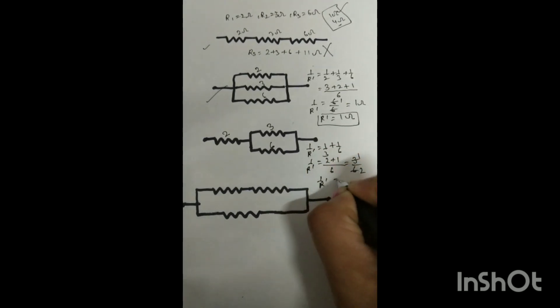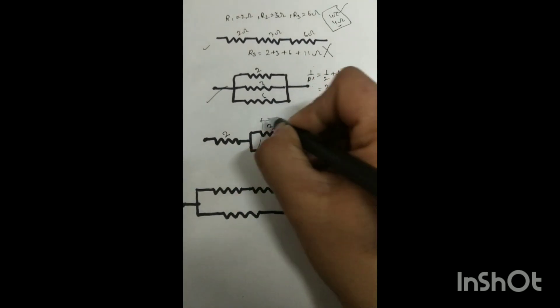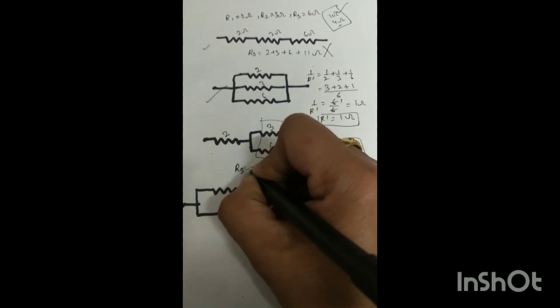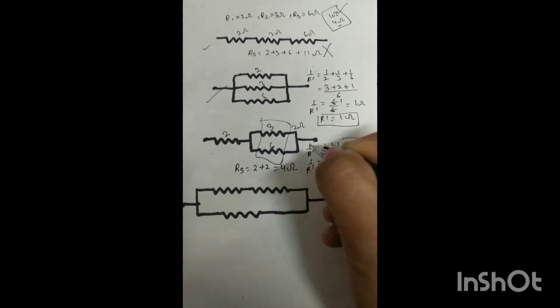Now the parallel part has a value of 2 ohm. The rest of the two resistors are in series, so Rs = R1 + R' = 2 + 2 = 4 ohm. So this was what we needed.